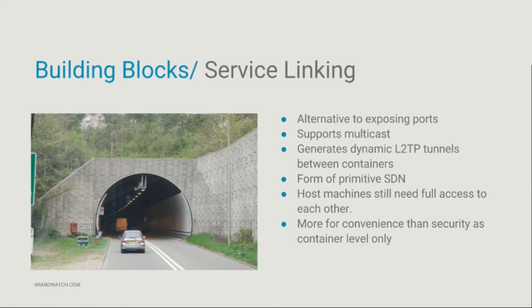Service linking is an alternative to exposing ports within Rancher. Normally in Docker you expose a port to let services talk, then have to manage port conflicts - especially problematic when services move around. With service linking you just declare which services need to talk to each other in your compose file, and Rancher sets up layer 2 tunnels between the containers, managing it all dynamically. It supports multicast too, so linked machines can view each other's broadcast packets. It forms a sort of primitive SDN - more for convenience than security. Host machines do still need full access to each other to establish those tunnels.